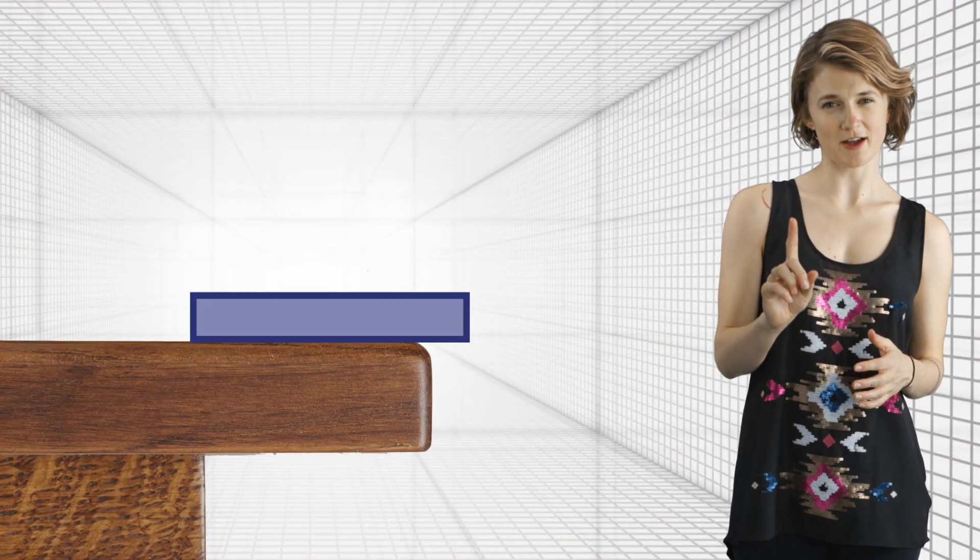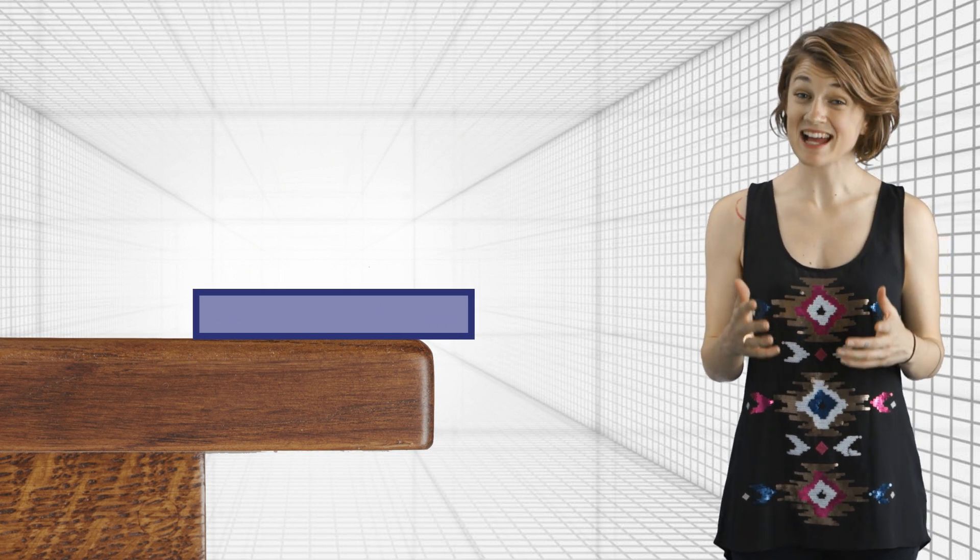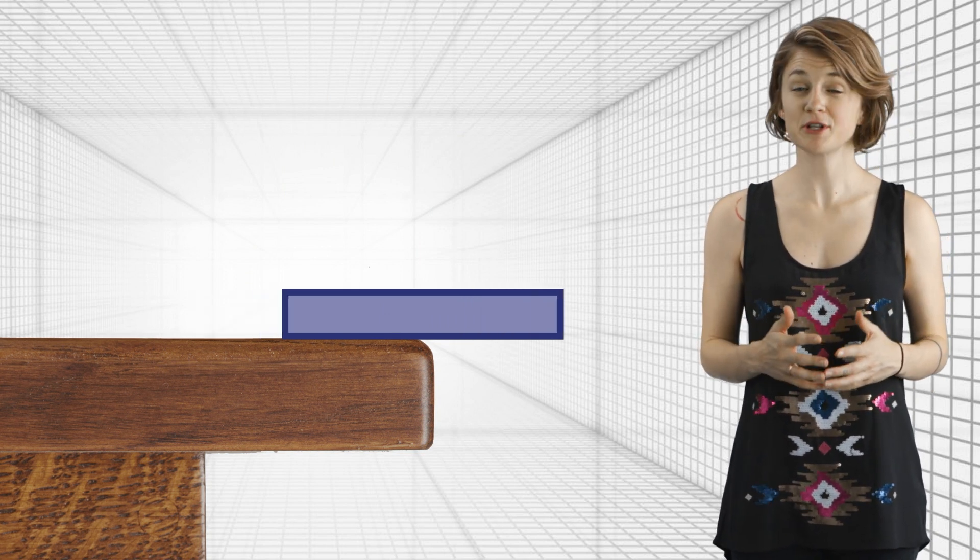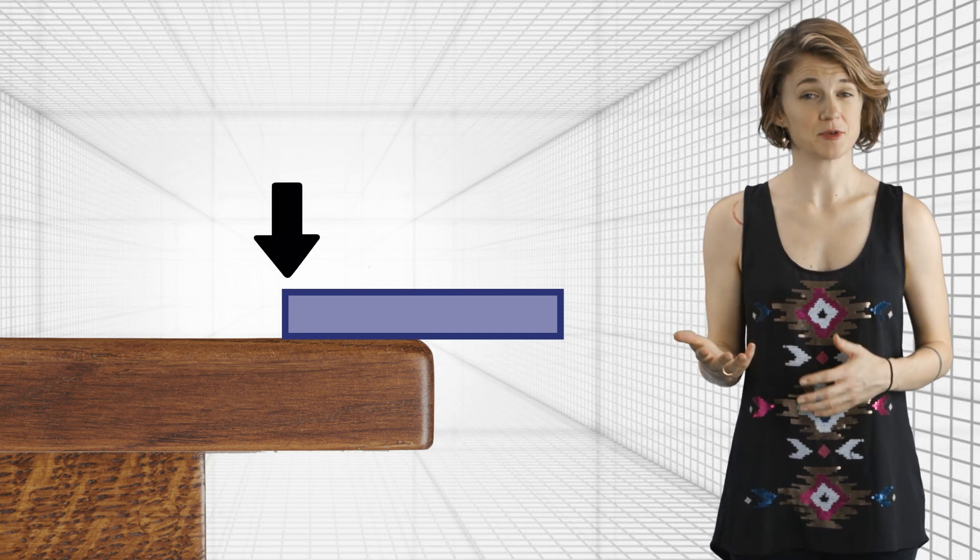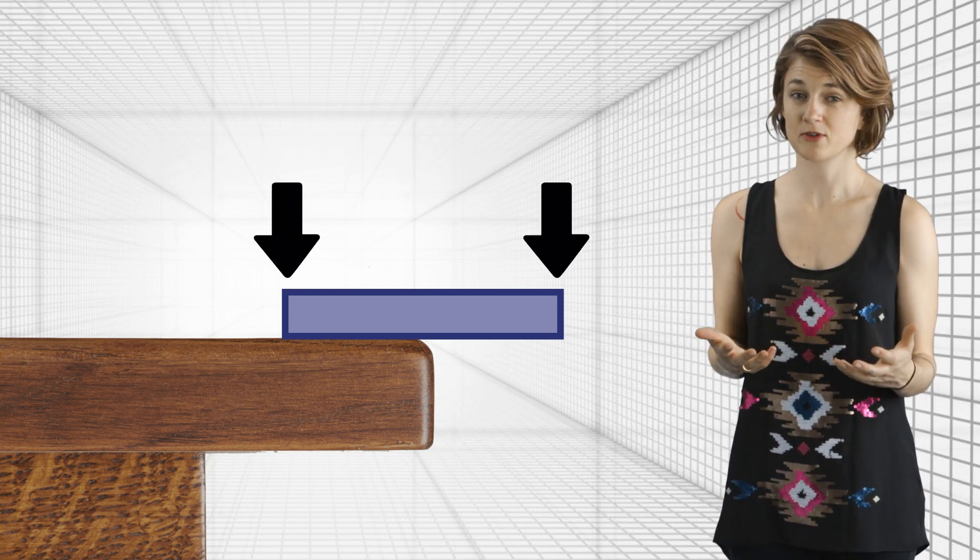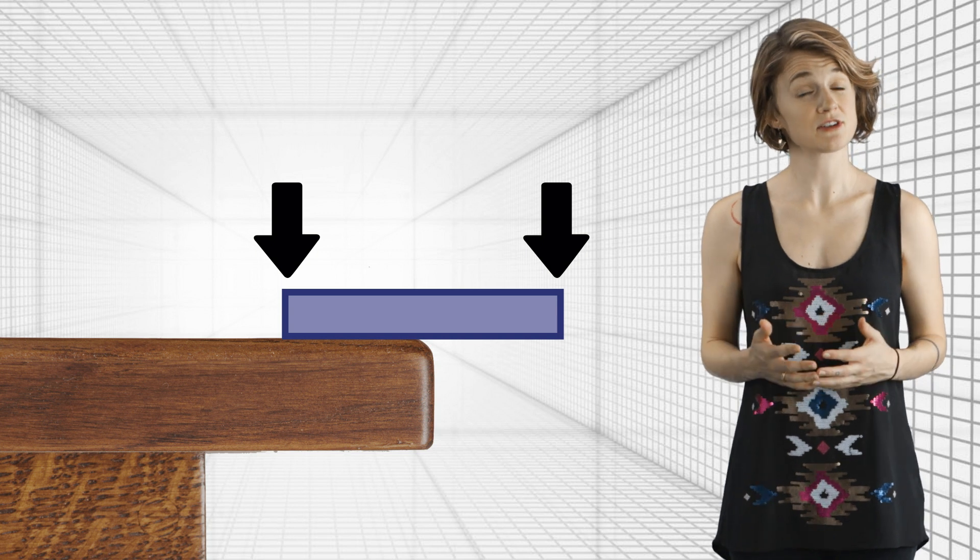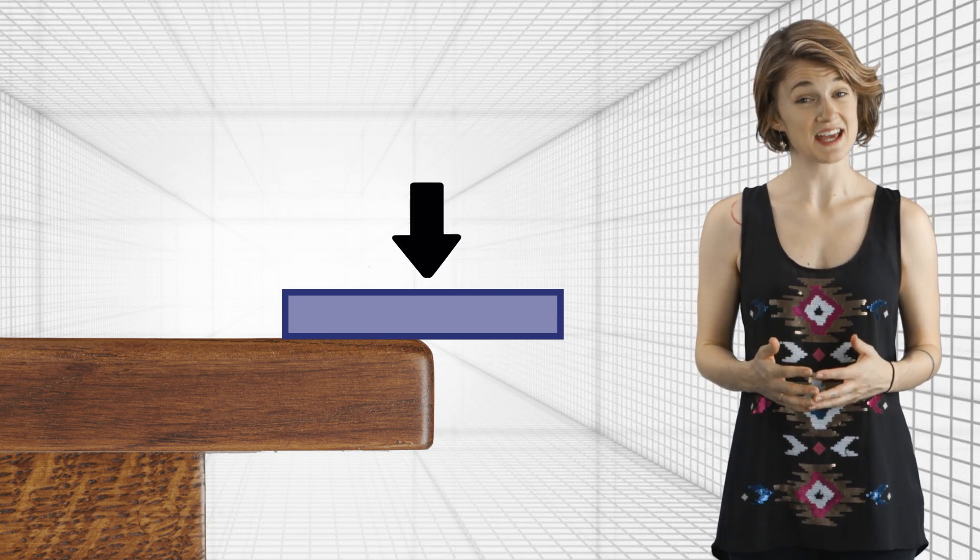Let's start with one block. You can push it exactly halfway off the table, but no more. At that moment, half its weight is on the table and half its weight is off the table, which means that its center of mass is exactly at the edge of the table.